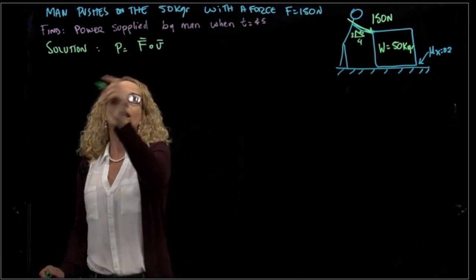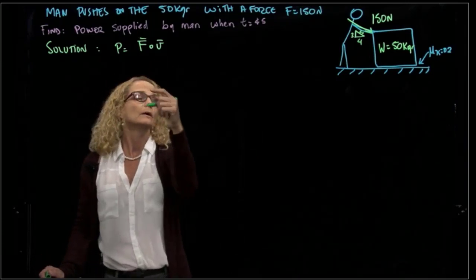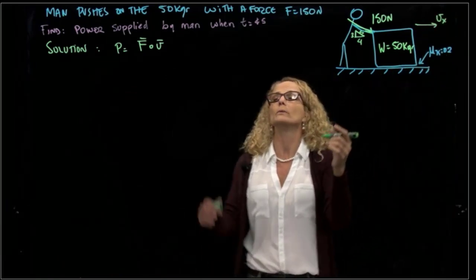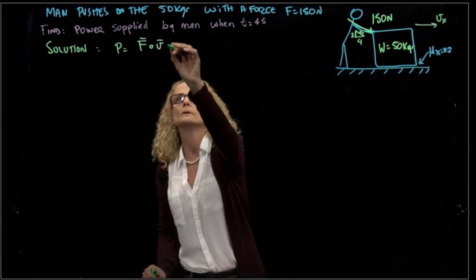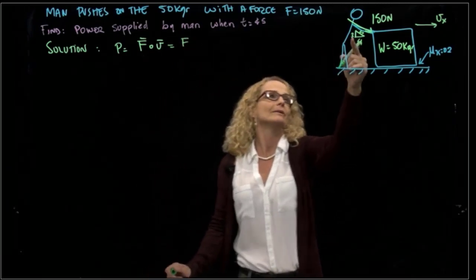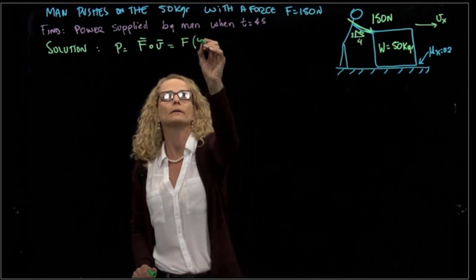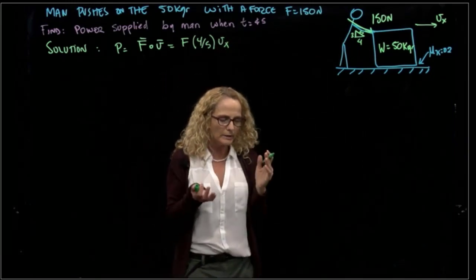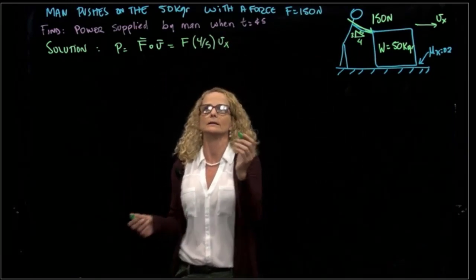Then, in the same direction, we know that the box moves only in x, so we will find the force in the x direction, which is force times velocity in x. What we need to find is the velocity in x.